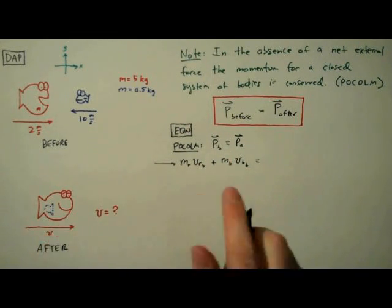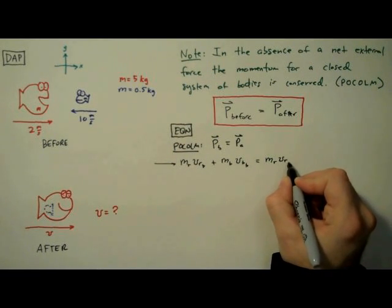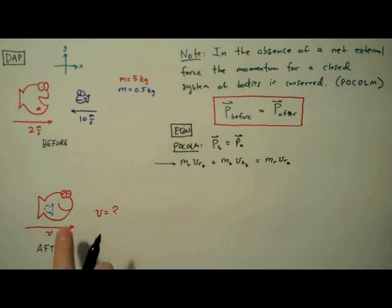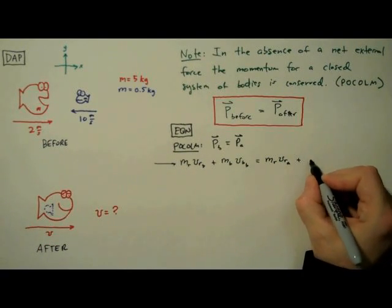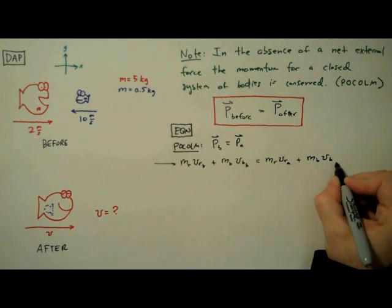The mass of the red fish times the velocity of the red fish after the collision, plus the mass of the blue fish times the velocity of the blue fish after.